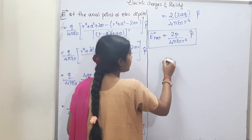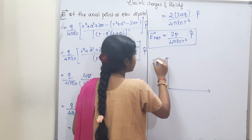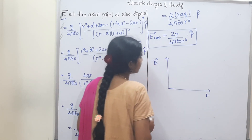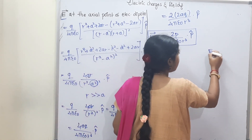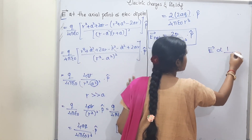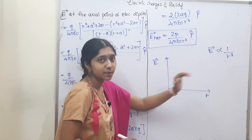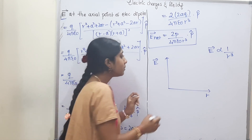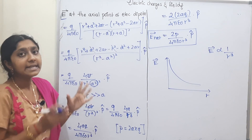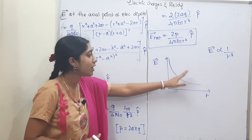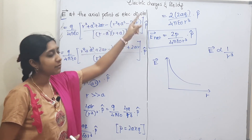From the final formula and graph, the electric field at the axial point of an electric dipole is directly proportional to 1/r³, or inversely proportional to r³. This is the key result of this derivation.